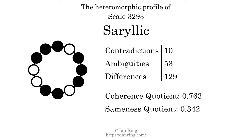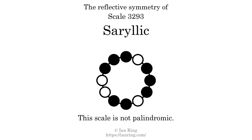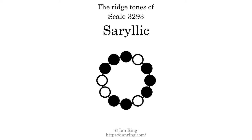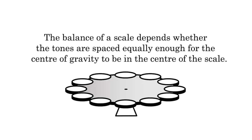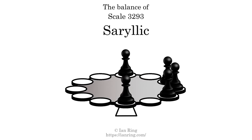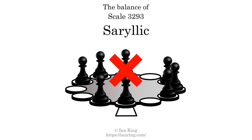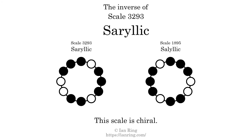This scale has no reflective symmetry. This scale has a different pattern of intervals ascending and descending, so it is not palindromic. This scale has no ridge tones. The balance of a scale depends on whether the tones are spaced equally enough for the center of gravity to be in the center of the scale. This scale is not balanced. The inverse of a scale is a mirror image — it is what you get when the sequence of intervals is reversed. The inverse of this scale is scale 1895, also known as Solilic. This scale is chiral; it cannot transform into its inverse by rotational transformation. This scale has no rotational symmetry.